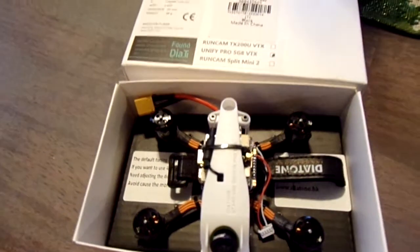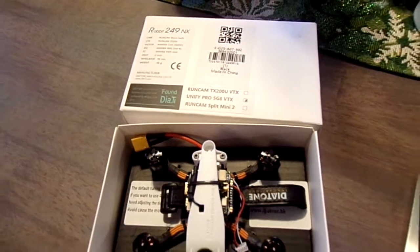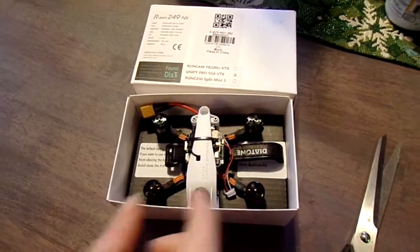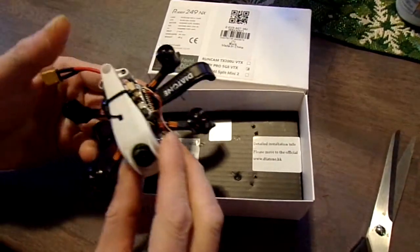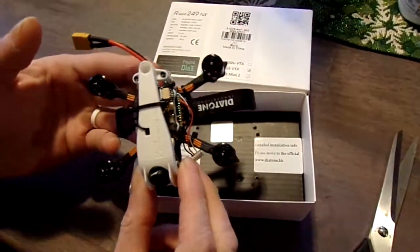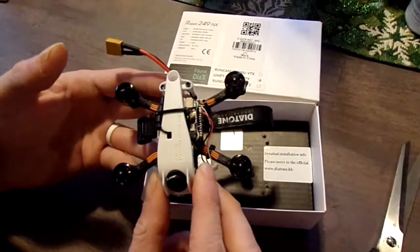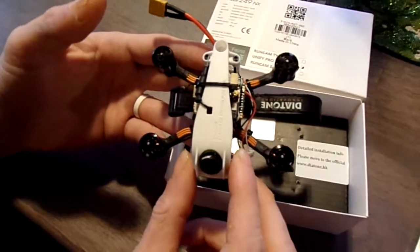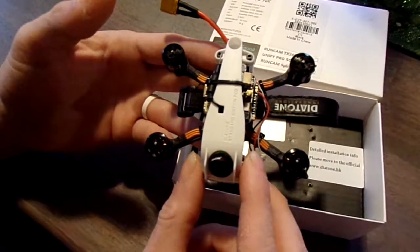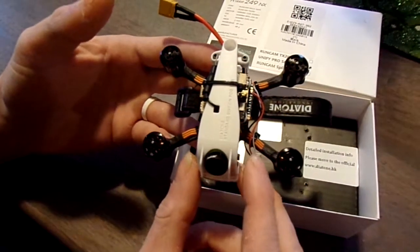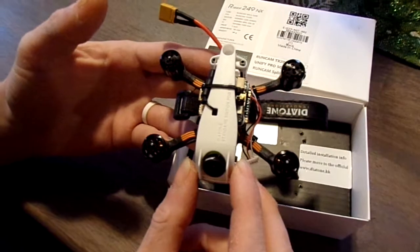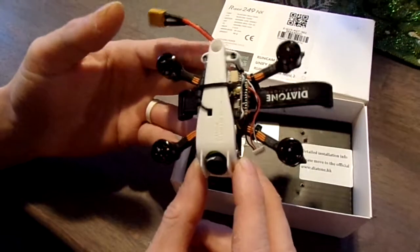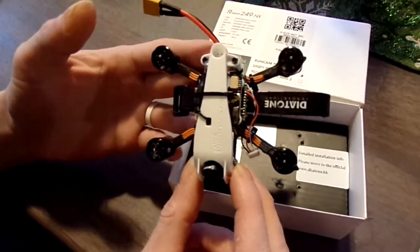It actually has the TBS Unify Pro VTX on it. I know there's been a lot of other reviews on YouTube from the different models. They've got several different models. You can get the HD version which has the RunCam Split 2, and you can get the regular RunCam versions with just the TX200U VTX on it. But this one is the TBS edition.